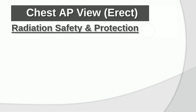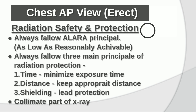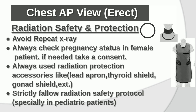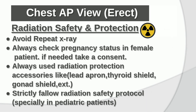Radiation safety and protection: Always follow the ALARA principle — As Low As Reasonably Achievable. Follow the three main principles: time, distance, and shielding. Minimize exposure time, keep appropriate distance, always use lead protection, collimate the X-ray beam, and avoid repeat X-rays. Always check pregnancy status in female patients. Use radiation protection accessories like lead apron, thyroid shield, and gonad shield. Strictly follow radiation safety protocol, especially with pediatric patients.